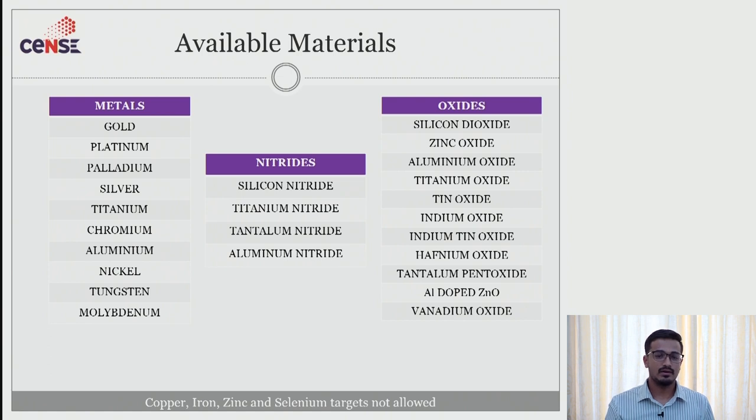Here are the available materials that we are going to deposit in our sputter tools. Naming few. In metals: gold, platinum, palladium, silver. In nitrides: silicon nitride, aluminium nitride, titanium nitride, tantalum nitride. In oxides: silicon oxide, zinc oxide, aluminium oxide, titanium oxide, tantalum oxide.